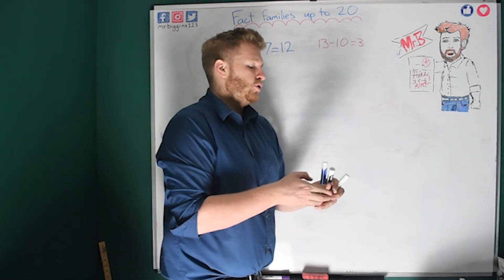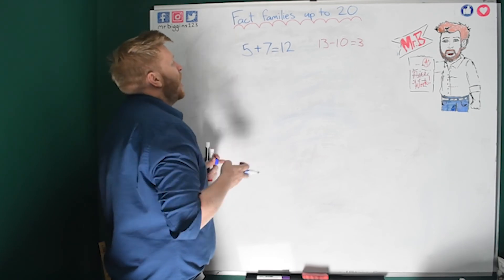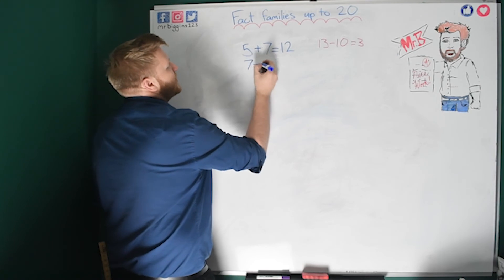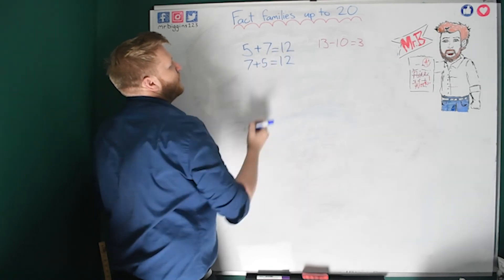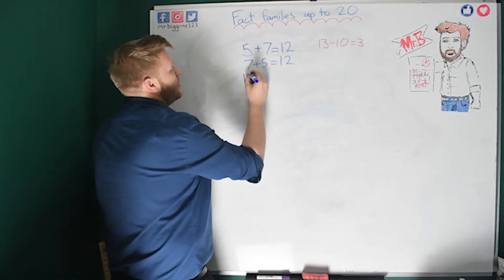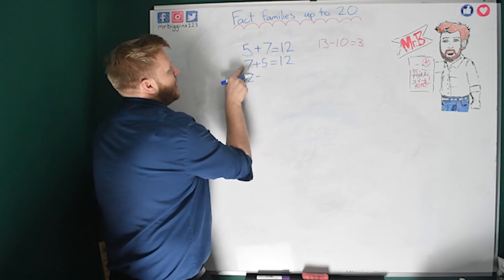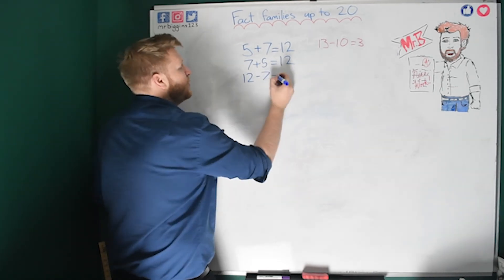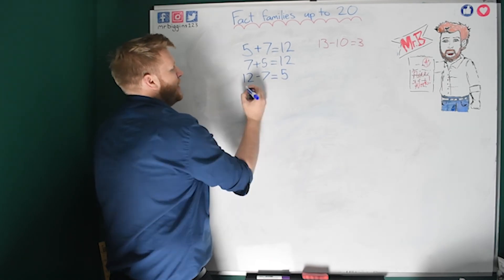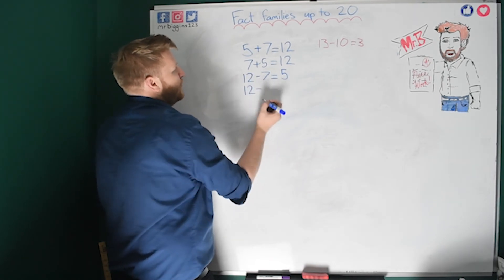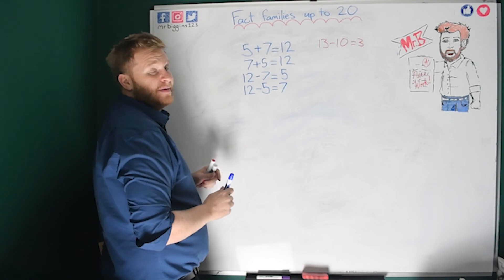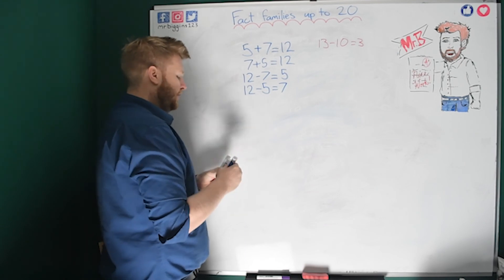Right, here we go with the answers. For the first one I've got my addition, easy one — swap them round: 7 plus 5 equals 12. Now I need my 2 take-aways. Biggest number first: 12 take away 7 equals 5, and 12 take away 5 equals 7. There's my 4 sums — well done if you got those!